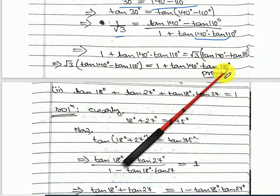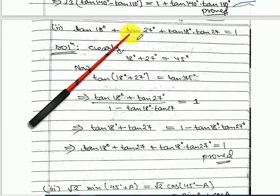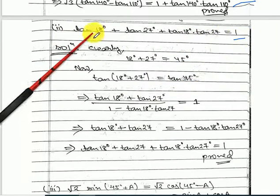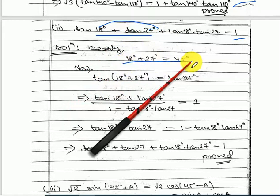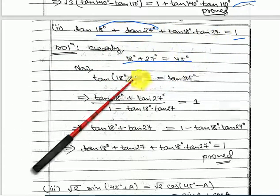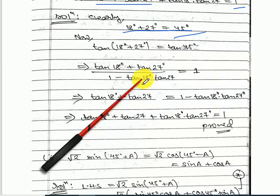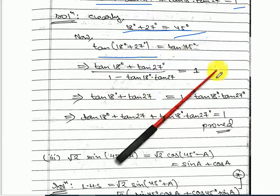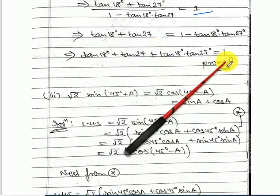Next: prove that tan 18 plus tan 27 plus tan 18 times tan 27 equals 1. Observe that 18 plus 27 equals 45. So 18 plus 27 equals 45; take tan of both sides. Use the formula for tan(A plus B) on the left hand side, and tan 45 equals 1 on the right. Simplify to prove it.